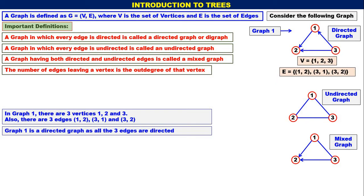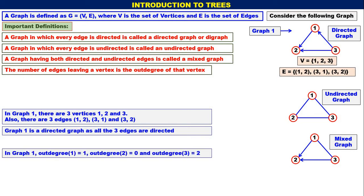The number of edges leaving a vertex is the outdegree of that vertex. In Graph 1, outdegree of 1 is 1 because 1 edge is leaving 1. Outdegree of 2 is 0 because no edges are leaving 2. Outdegree of 3 is 2 because 2 edges are leaving 3.